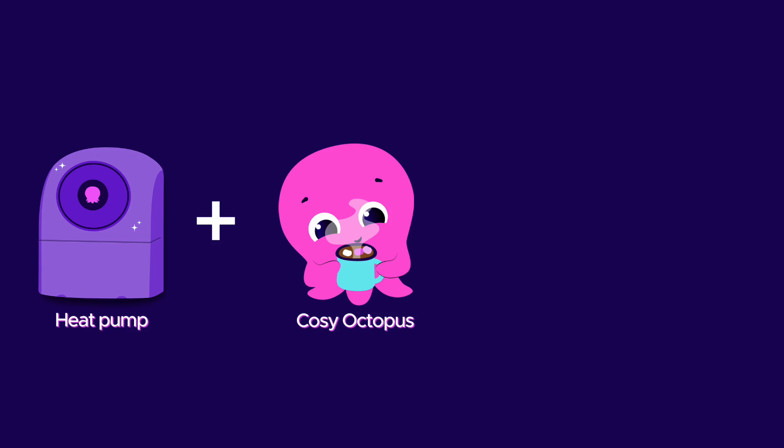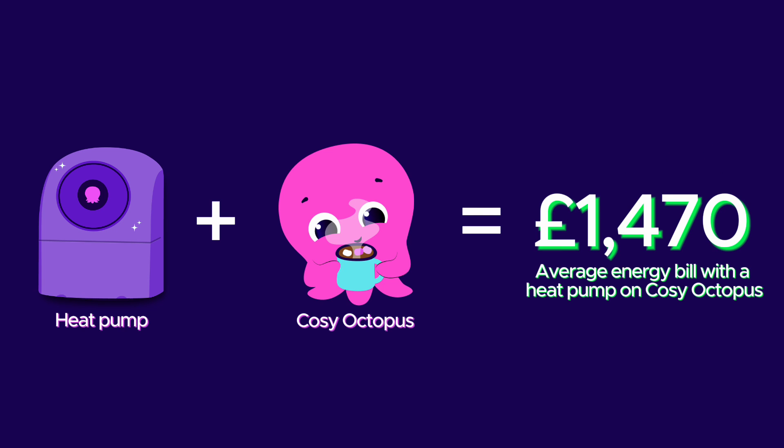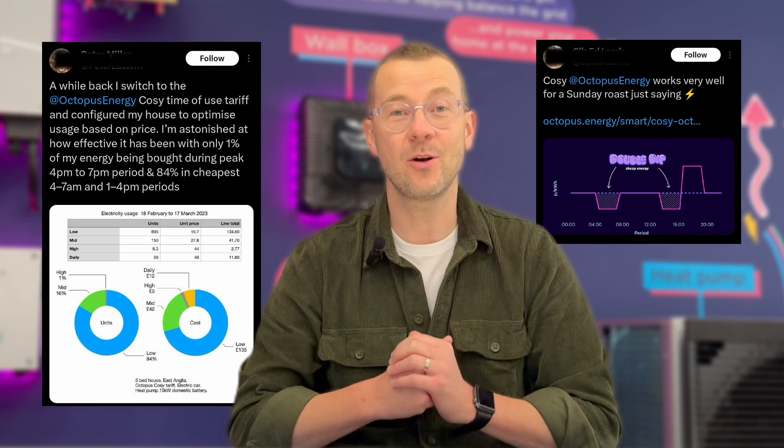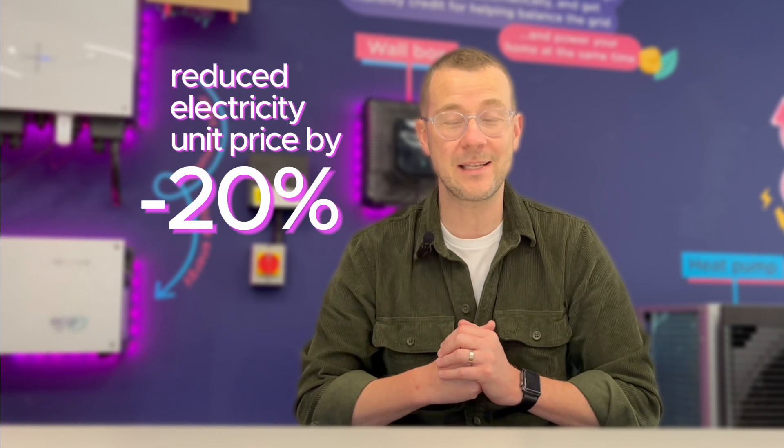But if you went with a heat pump tariff like Cozy Octopus and shifted your electricity usage out of peak times, you could save £220 compared to gas, bringing your energy costs down to £1,470 per year. These figures are based on the actual savings of our Cozy Octopus customers who reduced their electricity unit price by around 20% on average.